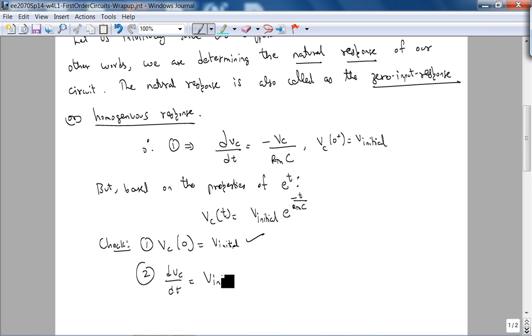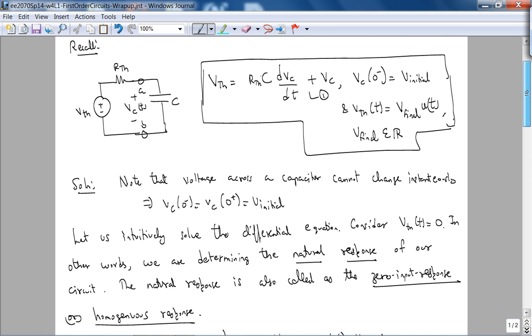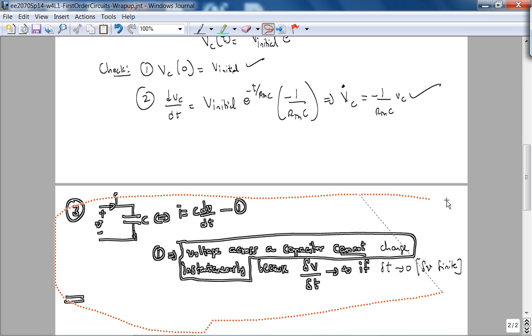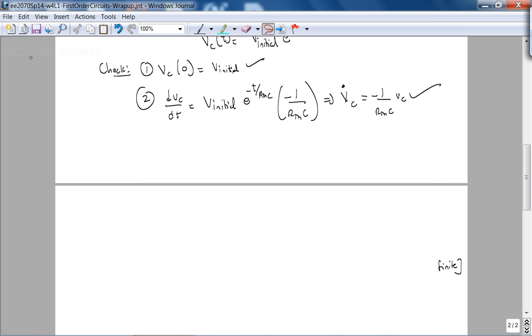Second, the derivative is V initial times e to the minus t over Rth times C times the derivative of the numerator by the chain rule. And by the way, you gotta get used to this notation, it's called Vc dot. The dot means derivative with respect to time because time as the independent variable is very special. So you can see here is our Vc repeated, so it's basically minus 1 over Rth times C times Vc, so it's good. So the homogeneous response is done.